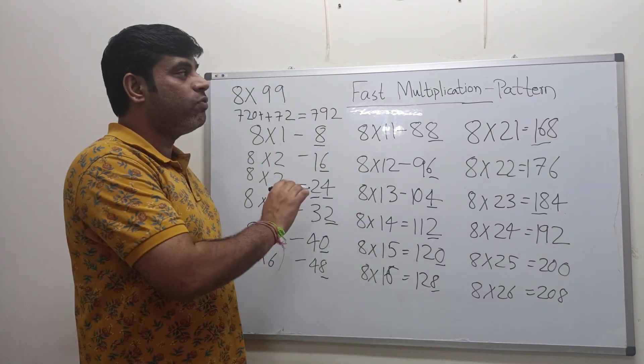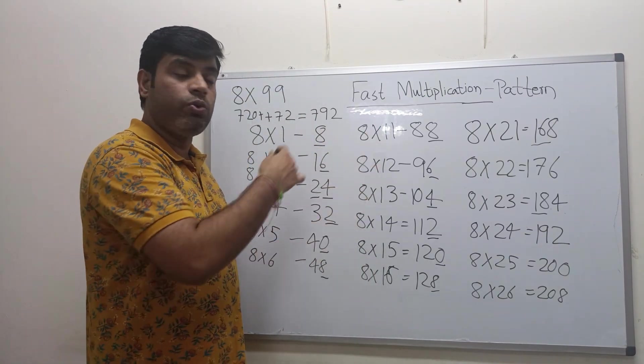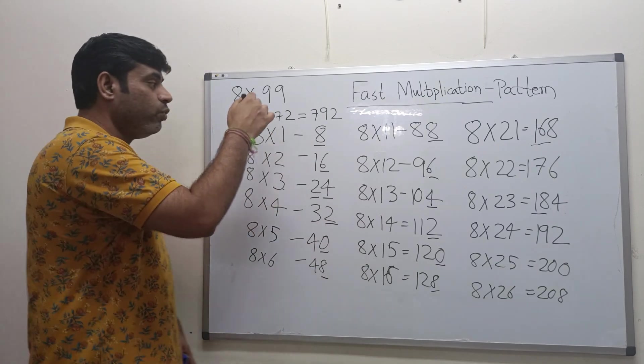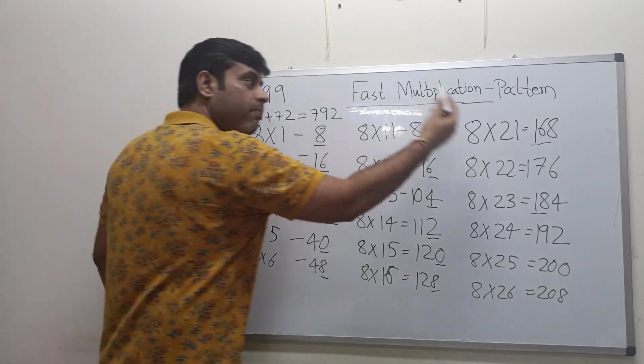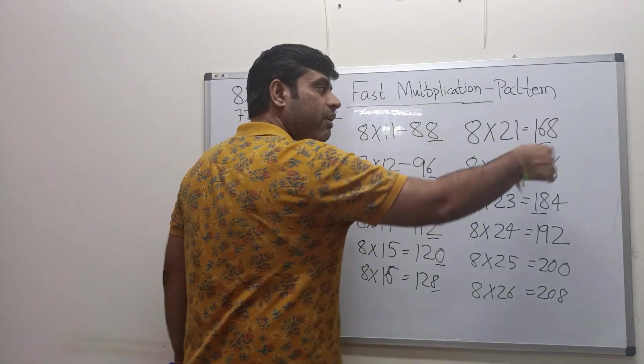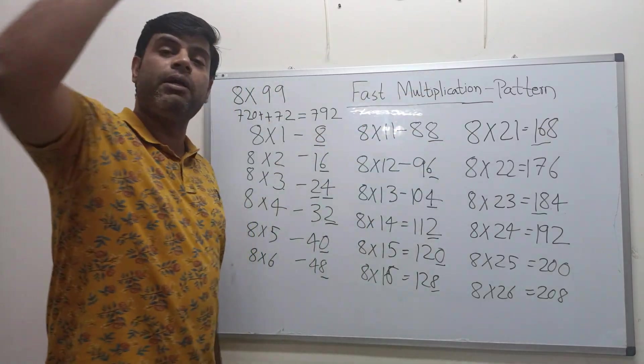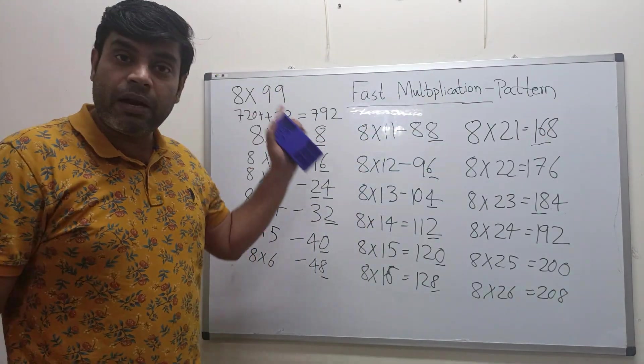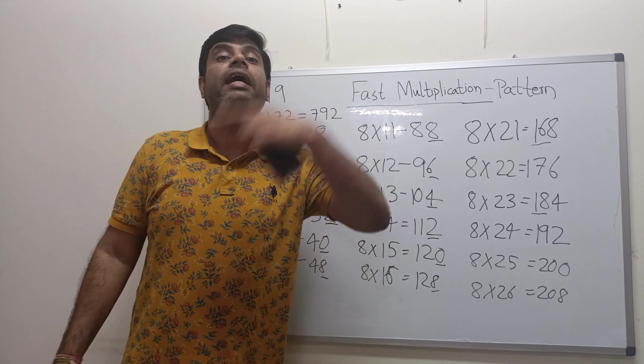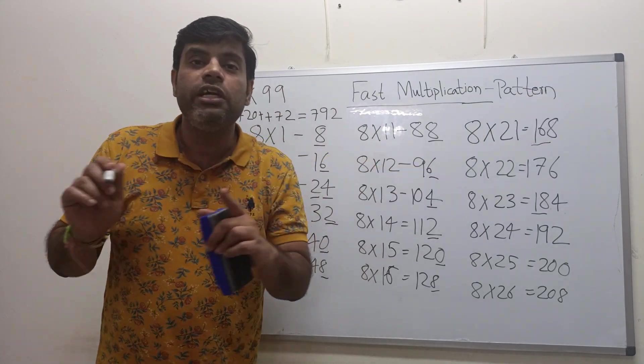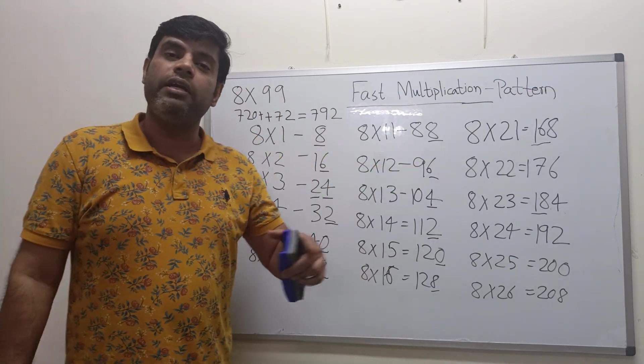This lesson was only to show you the pattern, how these are connected. How if you know 8 multiplied by 1, I can know 8 multiplied by 11 or 21 or 31 or 41 or 51 or even 8 multiplied by 91 or even 8 multiplied by 111 or 8 multiplied by 911, how easy it would be. That's what we are going to learn in lesson 2.